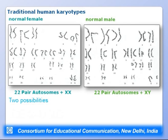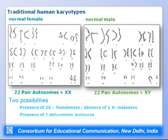Two possibilities existed: the presence of two X chromosomes gives femaleness, or the presence of Y determines maleness. Since one X chromosome is present in both males and females, the additional X gives femaleness in females, while the Y chromosome is present in males. The mechanism needed to be determined.